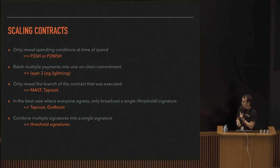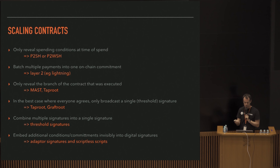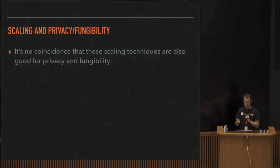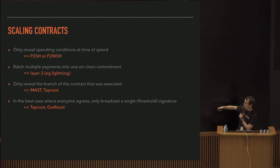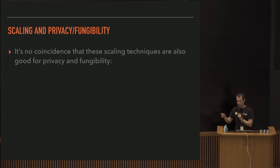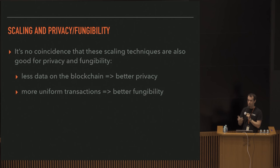With a single signature you can batch-validate with all other signatures in the block very quickly. You can combine multiple signatures into one with threshold signatures - Schnorr makes this very easy. You can embed additional conditions into a digital signature with things like adapter signatures. It's no coincidence that these technologies - P2SH, Lightning, MAST, Taproot, Graftroot, threshold signatures - are good for both scaling and privacy. Less data on the blockchain means better privacy, and more uniform transactions are better for fungibility.